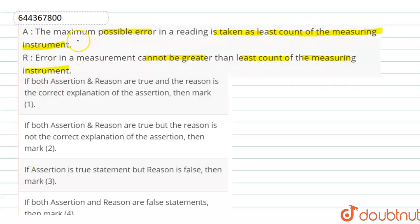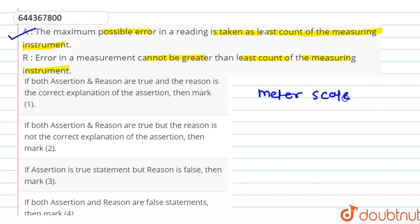According to the statement of assertion, the maximum possible error in a reading is taken as the least count of the measuring instrument. This statement is correct. Let us consider an example of a meter scale. If we use a meter scale in a measurement, then the least count — that is, the smallest possible measurement that can be done by the meter scale — is 0.1 centimeter.